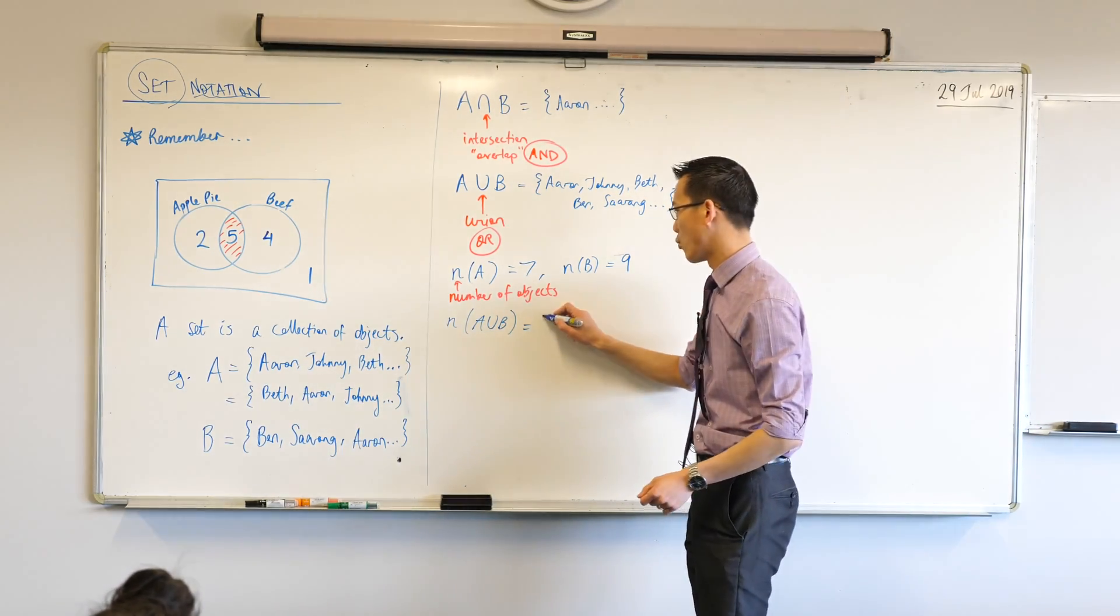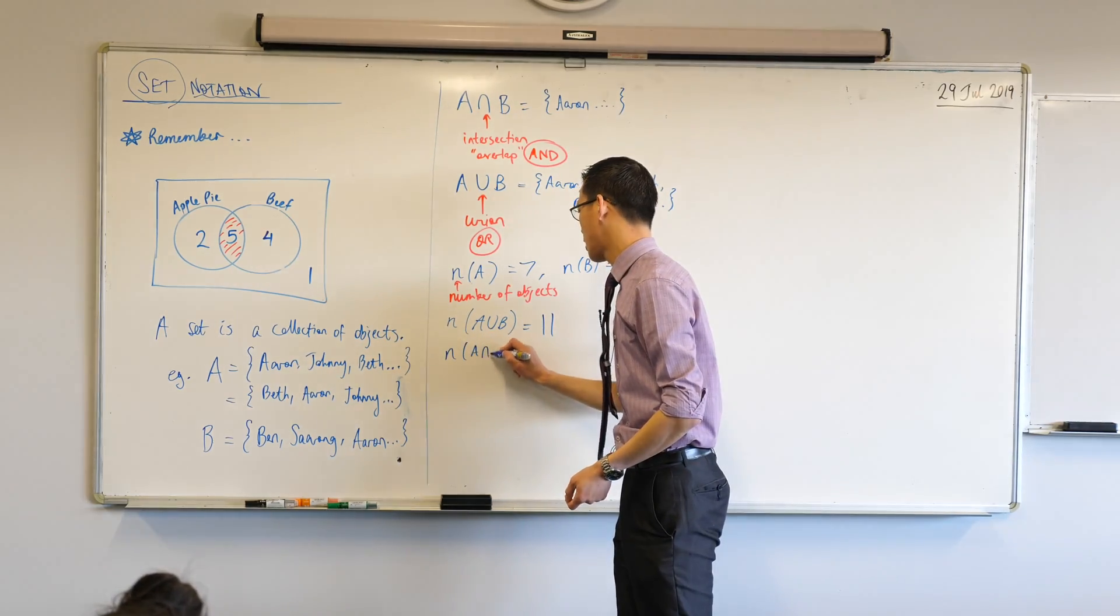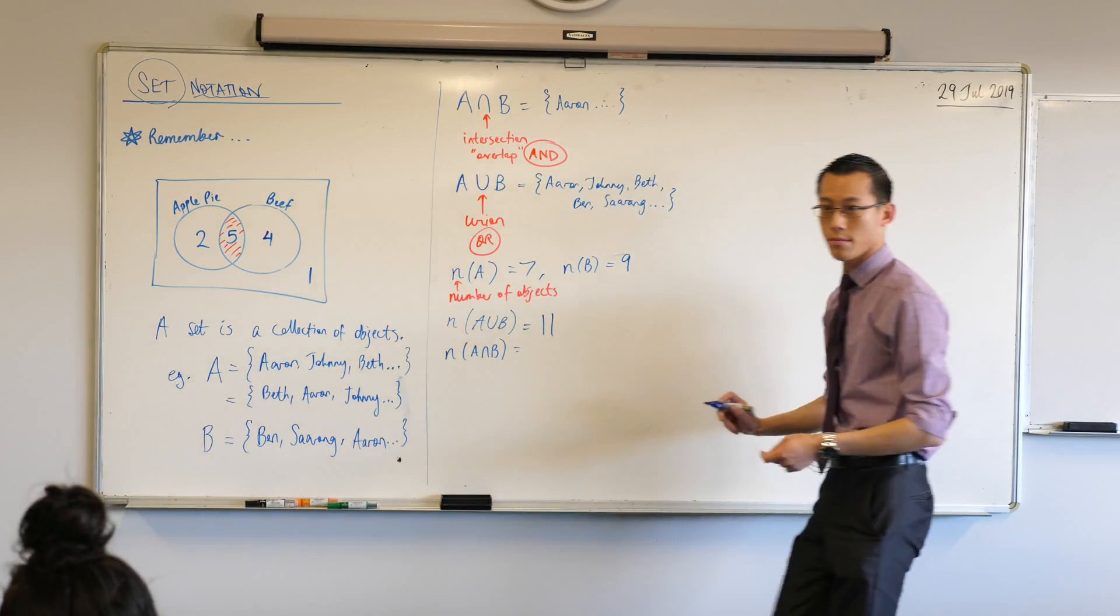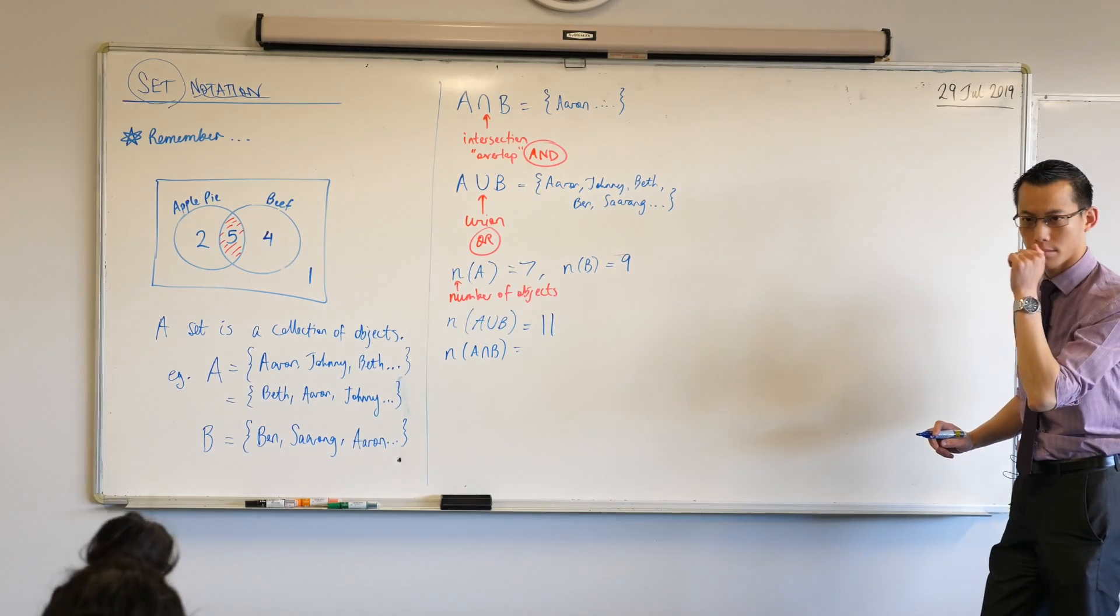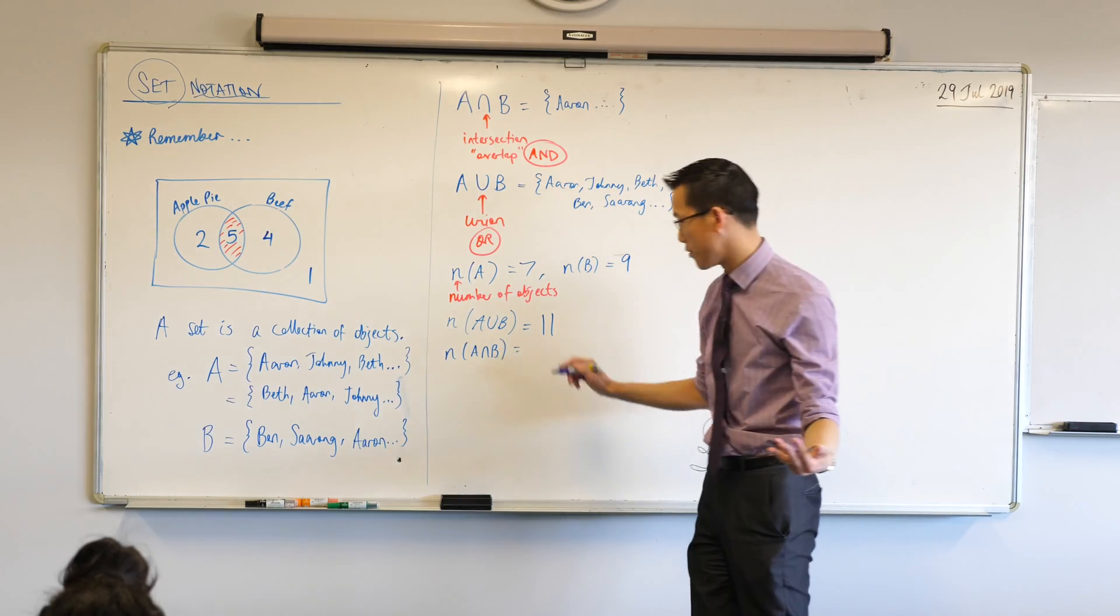It's 11, isn't it? Because there's that one on the other side. Okay, stay with me. Let's do the intersection. Have a look. This is the one I shaded in red, right? So this should just be the 5 is just one group.